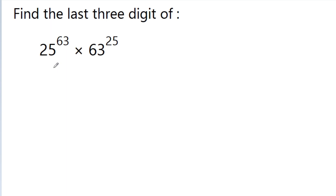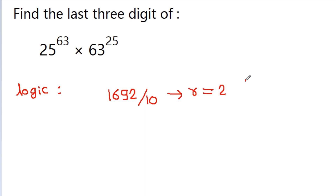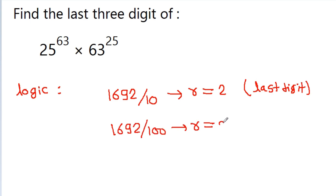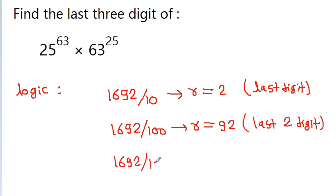Calculating it manually is not possible. The logic I am going to use is: if we have any number, suppose 1692, and if we divide this number by 10, then we get remainder equal to 2 — that is the last digit. If we divide 1692 by 100, then we get remainder equal to 92 — that is the last two digits. And similarly, if we divide this number by 1000, then we get remainder equal to 692 — that is the last three digits.